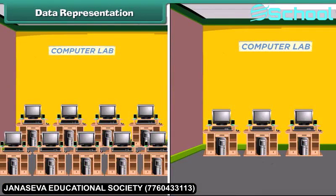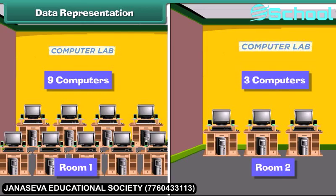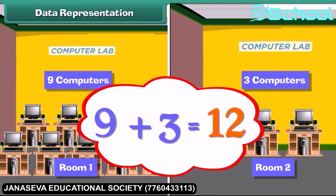Look at the diagram that shows the arrangement of computers in your computer school. Look at the plan and then answer the questions that follow. How many computers are there in room 1? There are 9 computers in room 1. How many computers are there in room 2? There are 3 computers in room 2. How many total computers are present in the school? There are 12 computers in total.